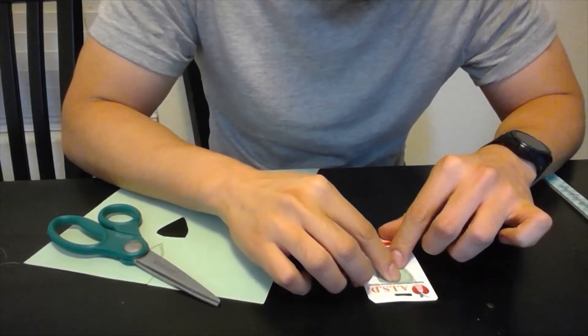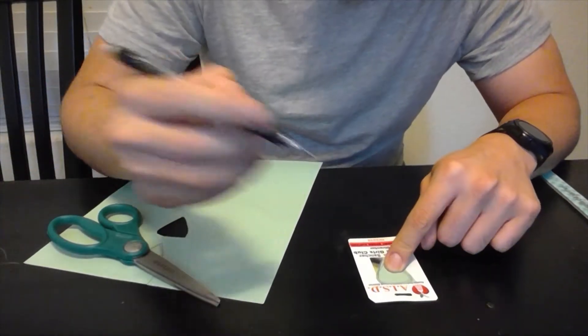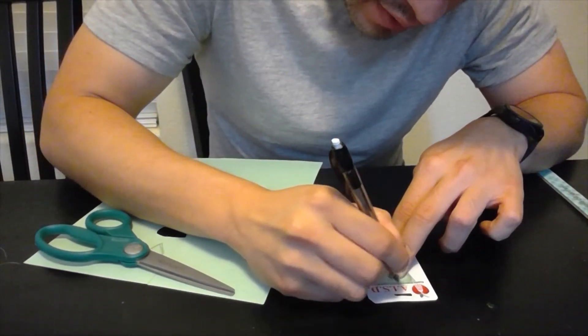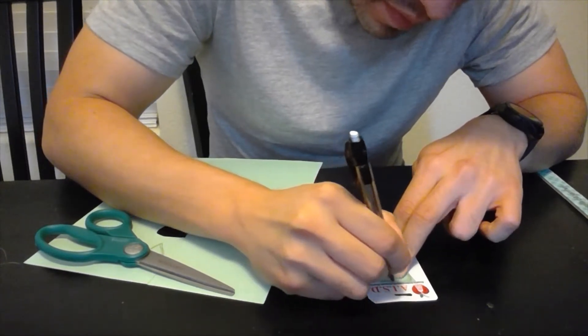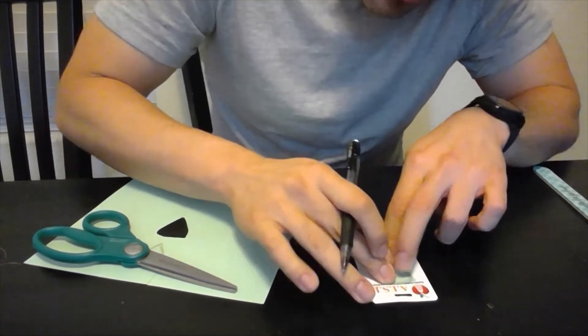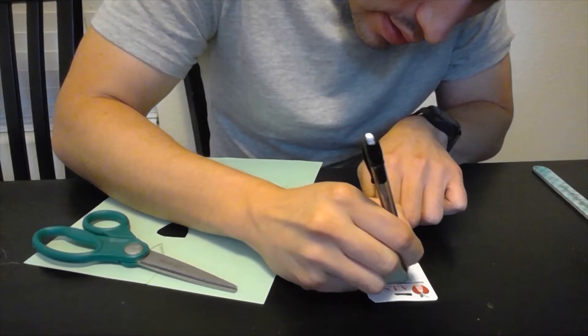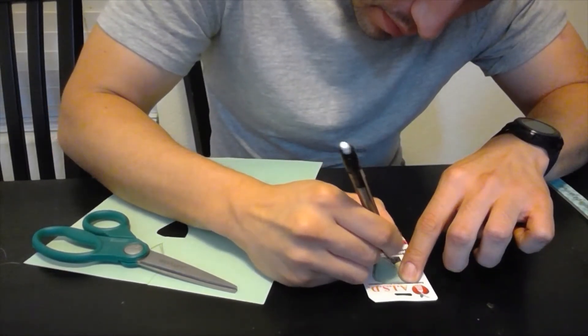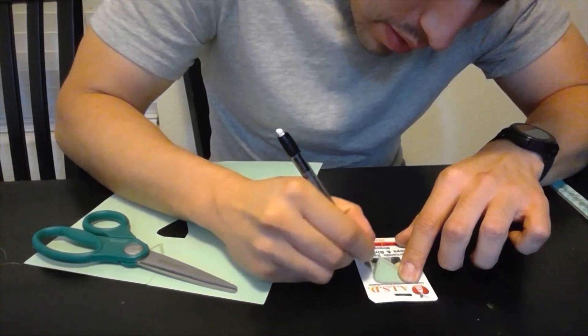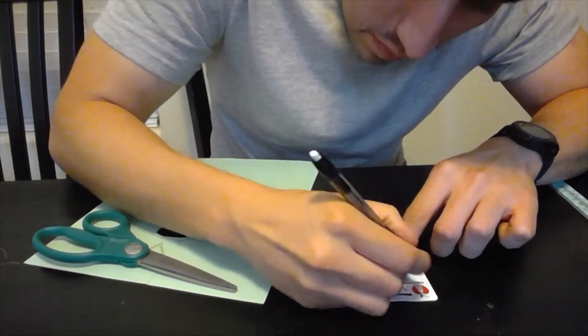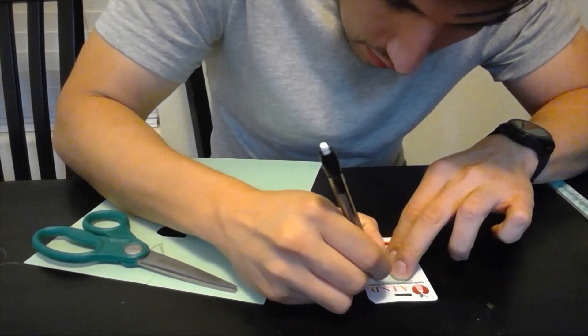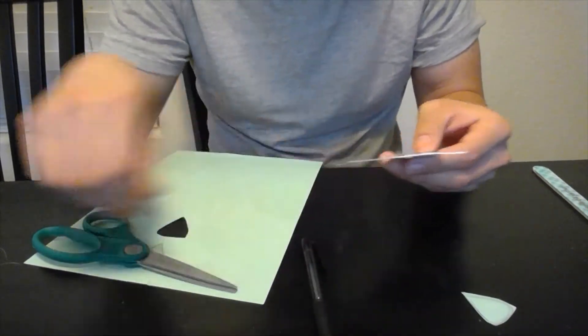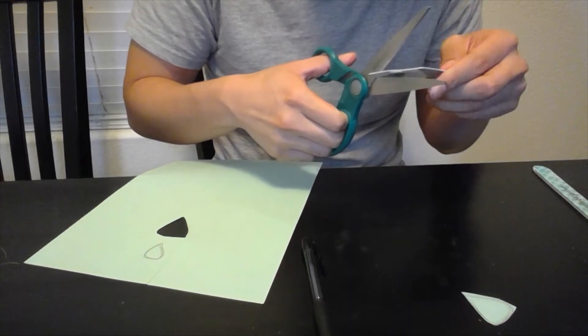You're just gonna trace. You could use a marker or a pencil—it's easier if you use a marker so you can see the line better. Okay, now I have my generic shape. I'm just gonna go ahead and cut through this.